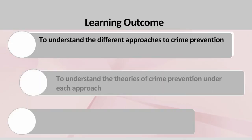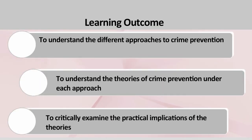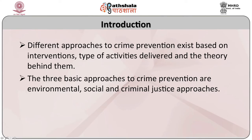Learning objectives: to understand the different approaches to crime prevention, to understand the theories of crime prevention under each approach, and to critically examine the practical implications of the theories. Introduction: different approaches to crime prevention exist based on interventions, types of activities delivered, and the theory behind them. Understanding the different approaches and their underlying rationale and theory is crucial to developing effective crime prevention programs and projects.